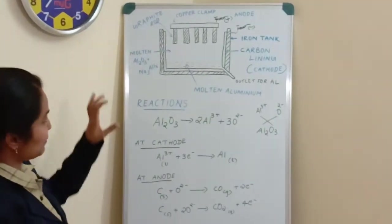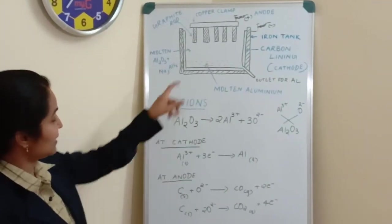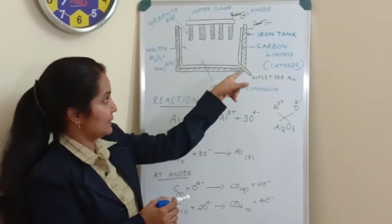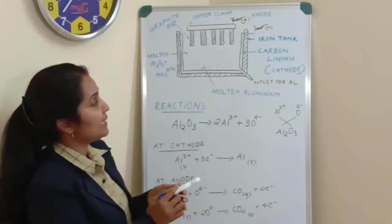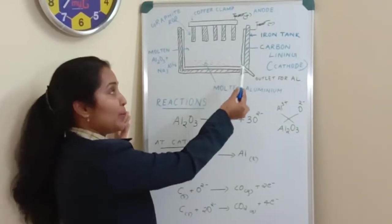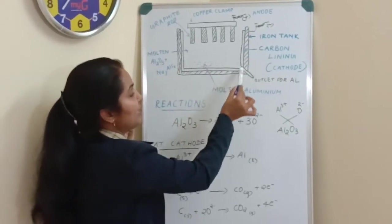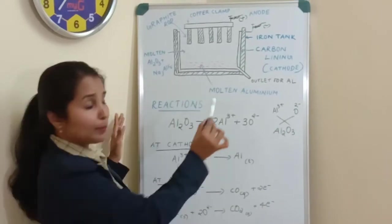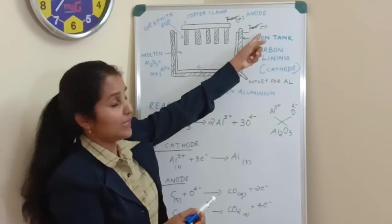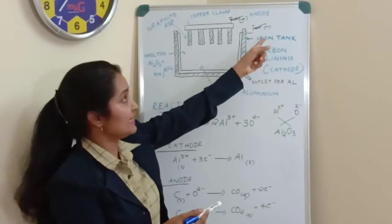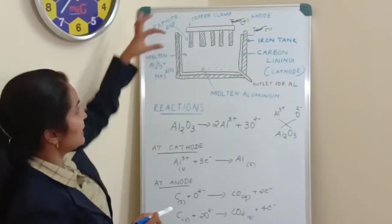Yes, here now the experimental setup for the Hall-Héroult process is ready. Now you can see here, it is an iron tank. Inside the iron tank, that is, the inner part of the iron tank is lined with carbon. This is a carbon lining. And this carbon lining inside the iron tank is connected with the negative terminal of the battery. That is, it is the negatively charged electrode. So it is cathode.